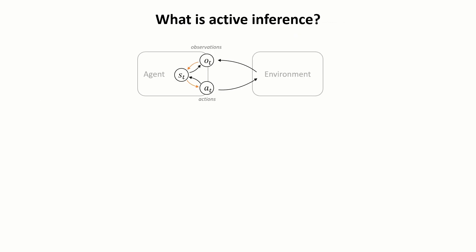Active inference is a theory from theoretical neuroscience that views perception and action in intelligent forms of life as a variational inference problem with a single objective.